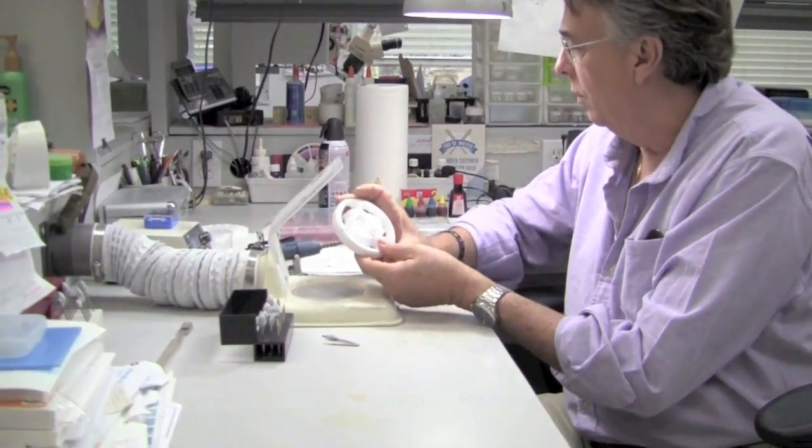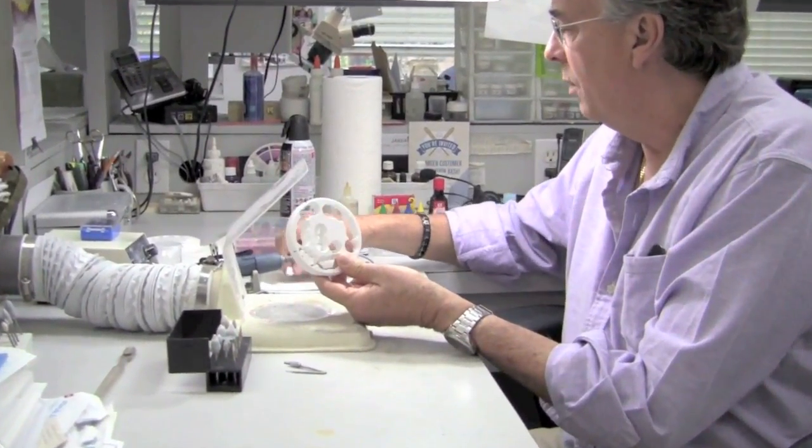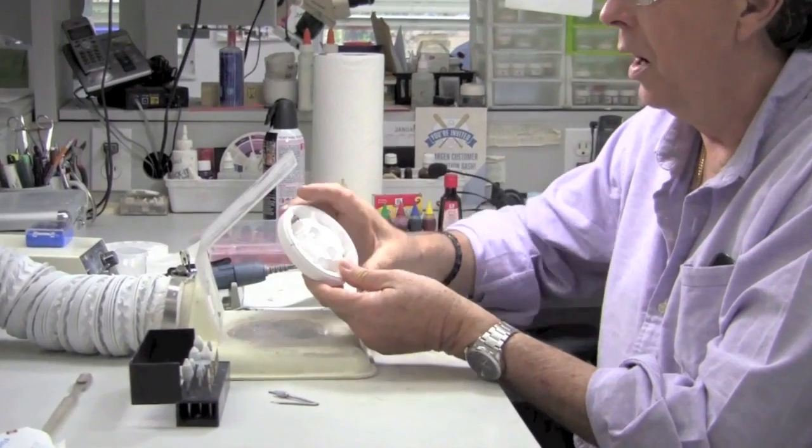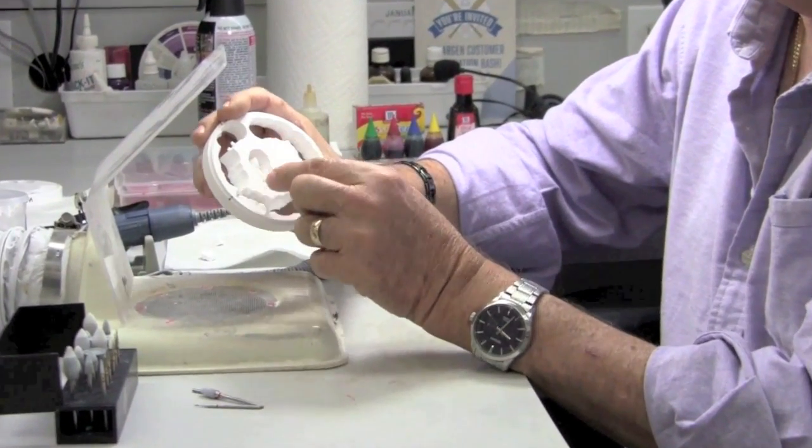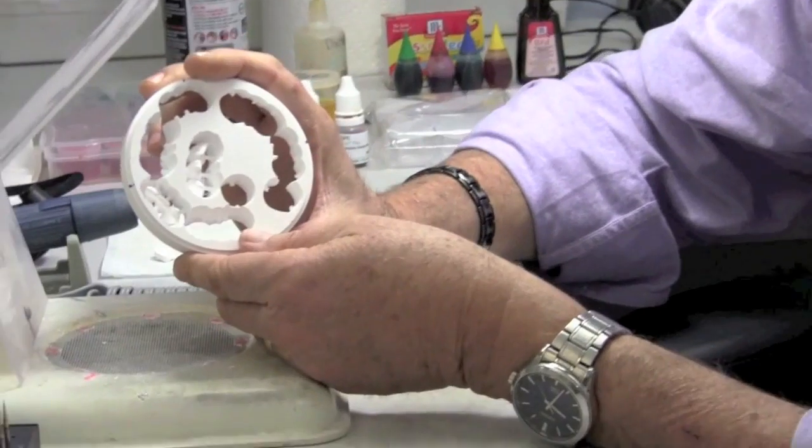So that being said, we also sprue our units with only two sprues, one buccal, one lingual. There's only bridges in here, but I have singles that I just took out of this puck. And we'll typically ask the mill to remove the sprues on the facial or buccal surfaces.